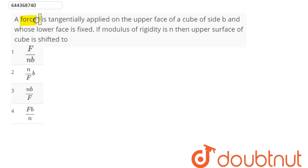Question is: a force F is tangentially applied on the upper face of a cube of side B and whose lower face is fixed. If modulus of rigidity is eta, then upper surface of the cube is shifted to.